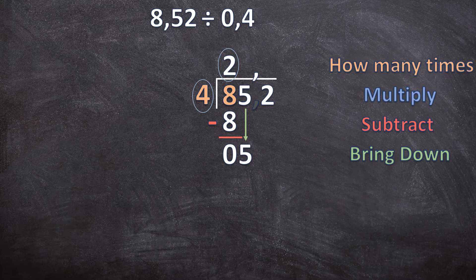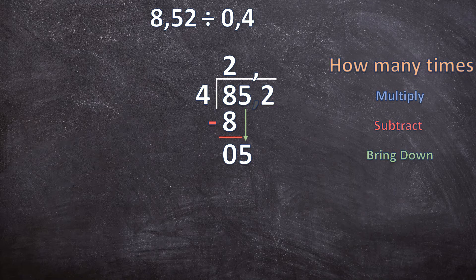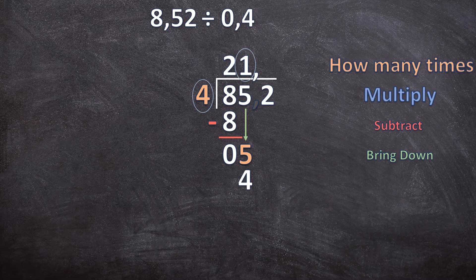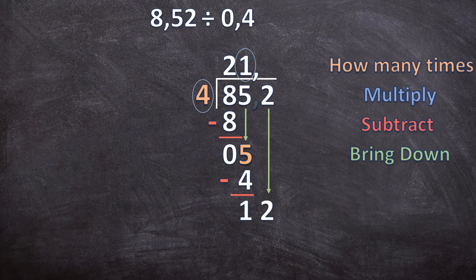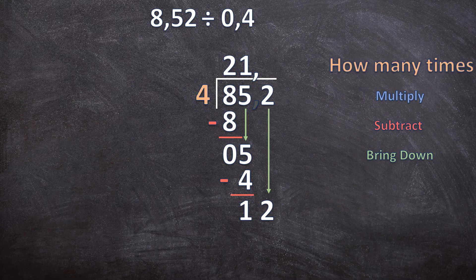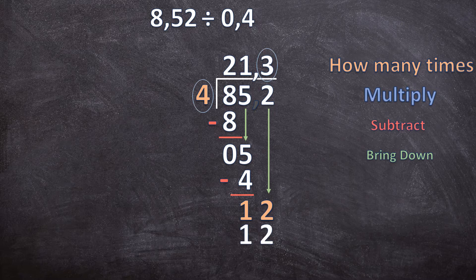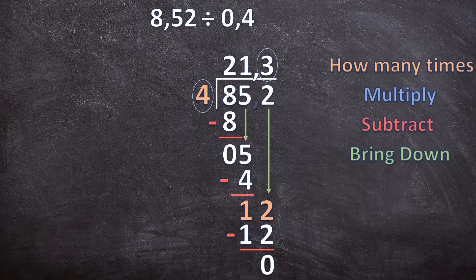Start the four steps again. How many times does 4 go into 5? One time. Multiply: 1 times 4 is 4. Subtract: 5 minus 4 is 1. Bring the next digit down — remember, we ignore the comma and bring the next digit down. How many times does 4 go into 12? Three times. Multiply: 3 times 4 is 12. Subtract: 12 minus 12 is 0. Bring down — there is no digit left to bring down, so we end with a zero.